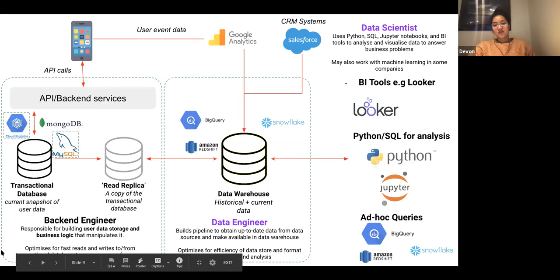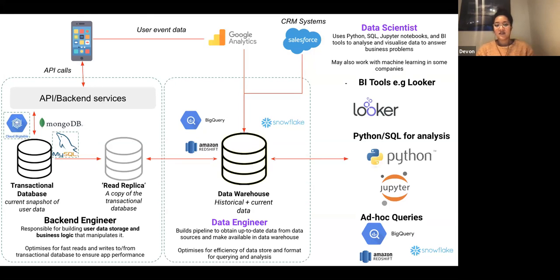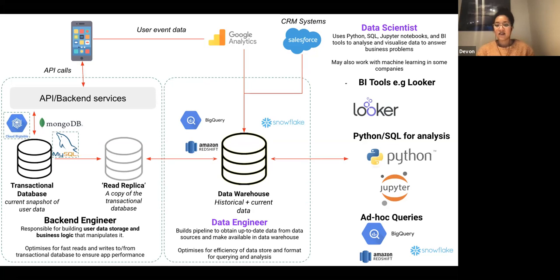I put this in to walk through an example of where these roles actually fit in. Imagine you're a company that builds an app — that's producing logs, a stream of data every time a user does something. You'd be storing that in a transactional database optimised for speed, because the app has to run quickly — you need to update, read, and write data very fast. That's a very different sort of database to the kind a data engineer or data scientist would work off of.